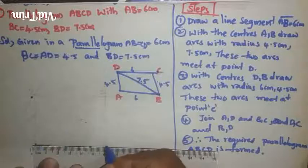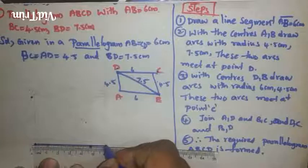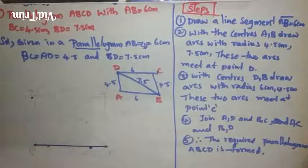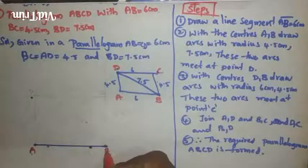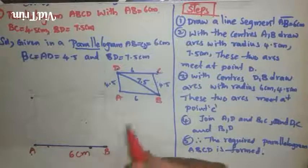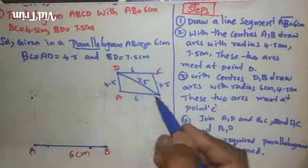First point on zero, second point on six. Join these two points. What is the line segment we have joined now? AB, 6 centimeters. Now which triangle should we construct here when diagonal is given? ABD triangle we should construct.